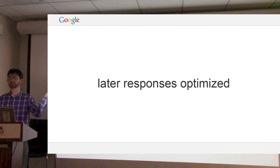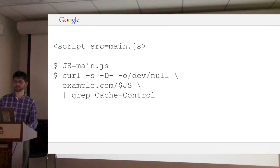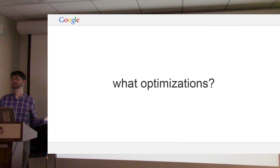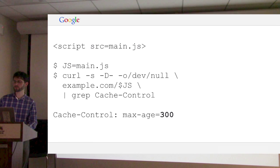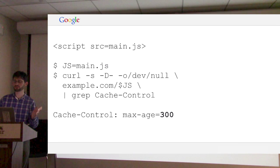So what kind of optimizations do we do? We might have a web page with a JavaScript file. If we fetch this JavaScript file and look for the cache control header, we see it's 300 seconds. This is a pretty common default configuration — the web server is saying to browsers that if they need this file again within 300 seconds, that's fine; otherwise they have to re-request it.